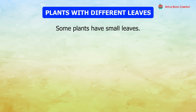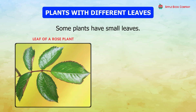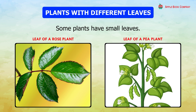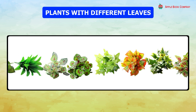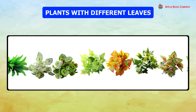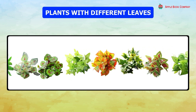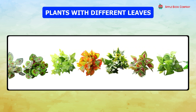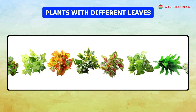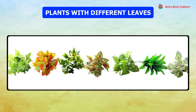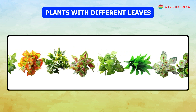Some plants have small leaves, like the leaf of a rose plant and the leaf of a pea plant. Some plants have round leaves and some have long leaves. Some plants have dark green leaves and some have yellow leaves.